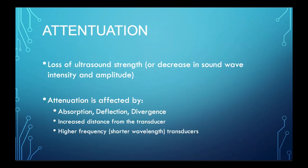Let's talk a little about attenuation. It's an important concept. As sound waves travel through tissues, energy is lost. This loss of energy or loss of the wavelength signal is what we term attenuation. It is due to absorption, deflection, and divergence of the sound waves due to the structure. These specific characteristics make up what we call the attenuation coefficient of different tissues.